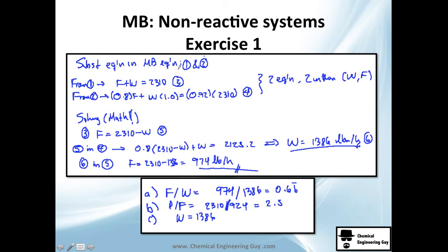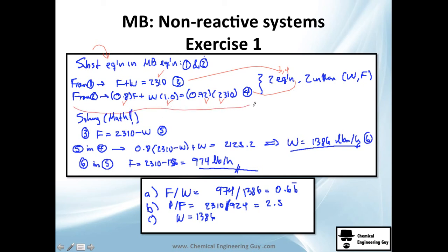To finalize, we substitute the known values into mass balance equations one and two. Plugging in all the data, we get two equations with two unknowns — F and W. From equation three, we isolate one variable and substitute into the other equation, ending up with one equation and one unknown. We solve for F, then back-substitute to get W. After this, everything else is just algebra — any engineer who gets these two equations can solve it easily.